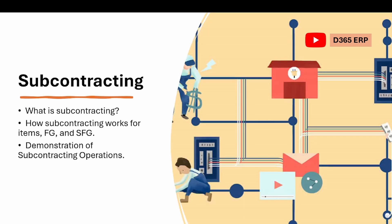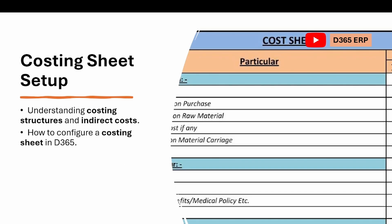Then we move to subcontracting. Many consultants are not fully aware of subcontracting or have not commonly used it in ERP implementations. We will cover all parts: what is subcontracting, how it works for finished goods and semi-finished goods, and we will demonstrate with examples how subcontracting operations work in Dynamics. Next is the costing sheet setup — even if you are a supply chain or production consultant and don't know finance concepts well, this episode will give you the basics of finance, how production entries are created in finance, and how the costing structure gets configured.